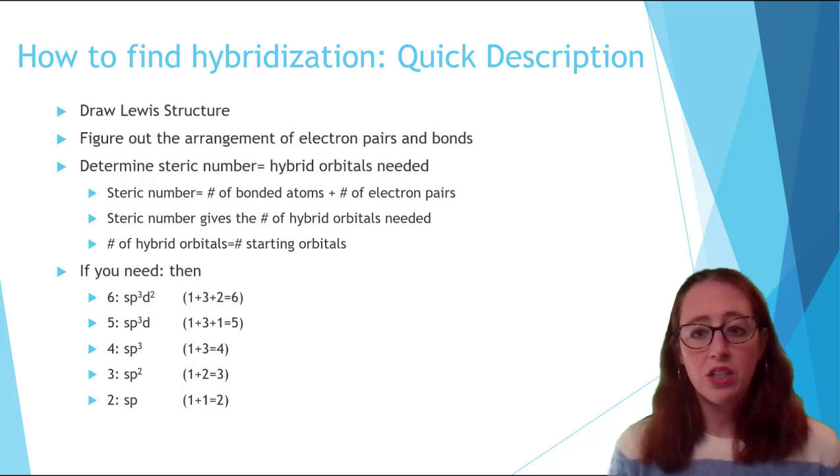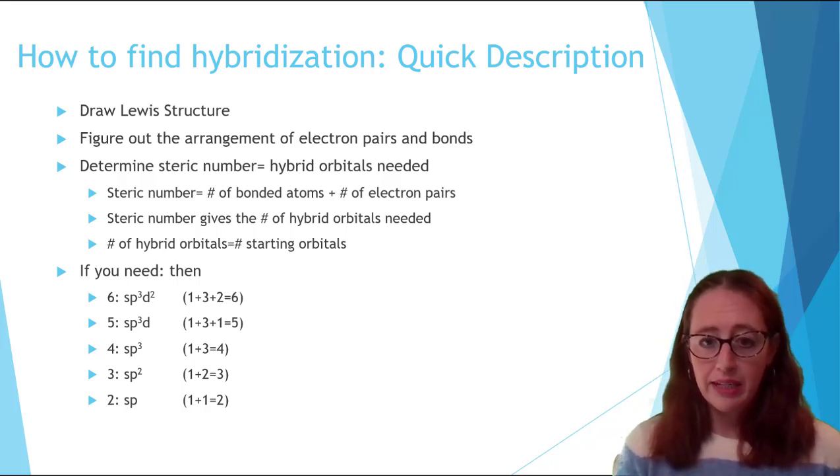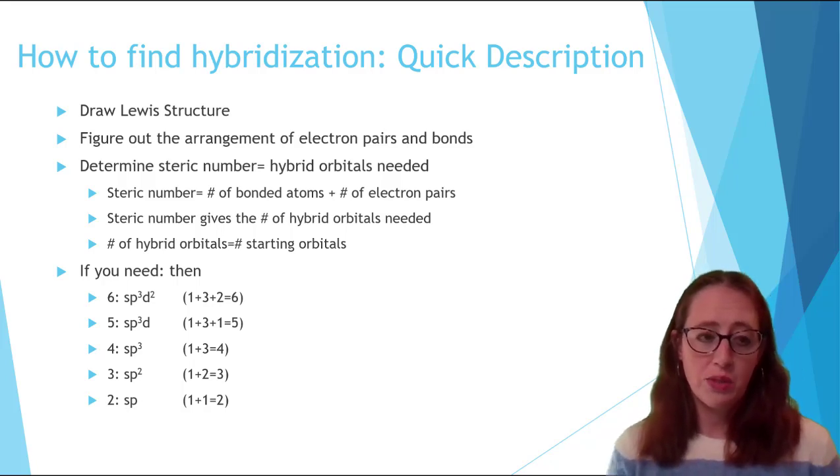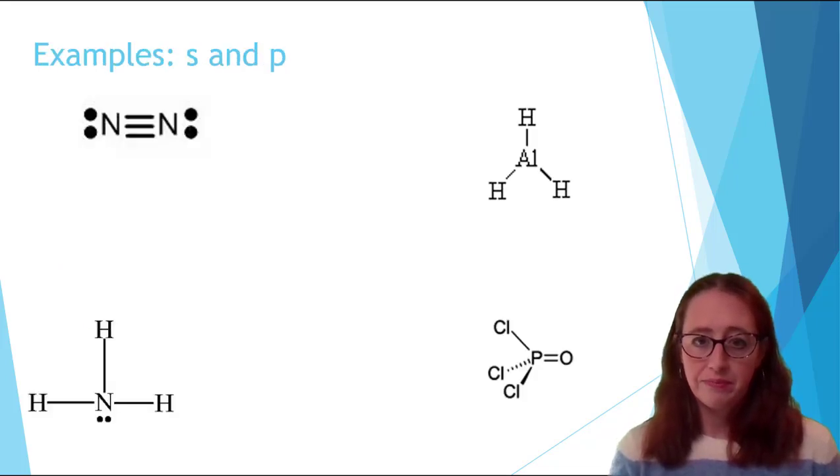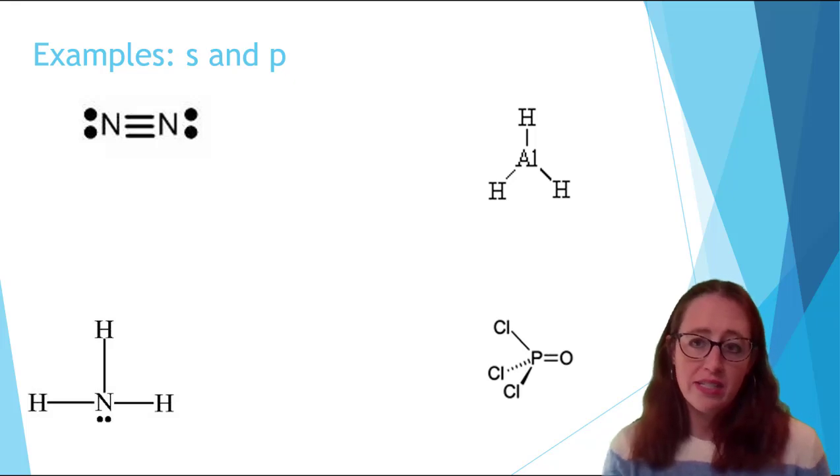Note, you do not include the one after the D orbital. It's SP3D. And also, it must be in this order. You cannot switch the order of the letters in this case. Take a moment and try to determine the hybridization of each central element in this picture, and then we'll go over them together.